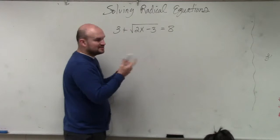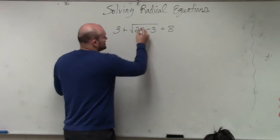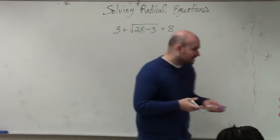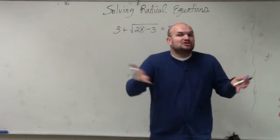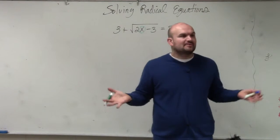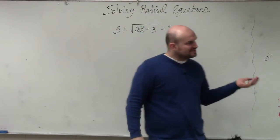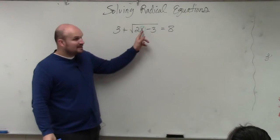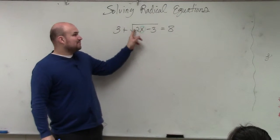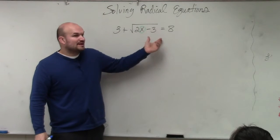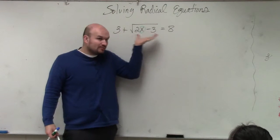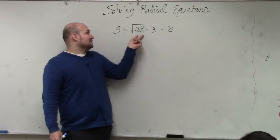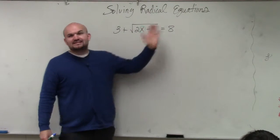So when given a problem like this, there are a couple things I want you to understand. First of all, we're solving using inverse operations — we want to undo everything that's happening to our variable. In this problem, there's a lot of things happening to our variable: it's being multiplied by 2, subtracted by 3, all of that is under the radical. Then, outside of the radical, it's being added by 3, and then it's equal to 8.